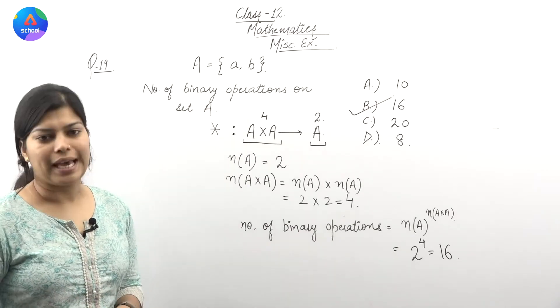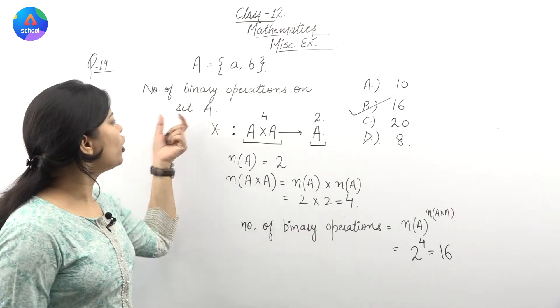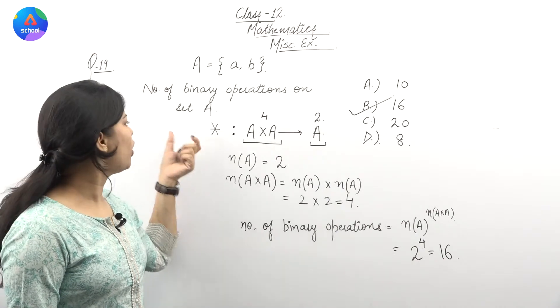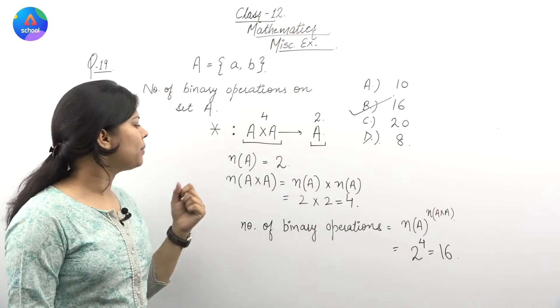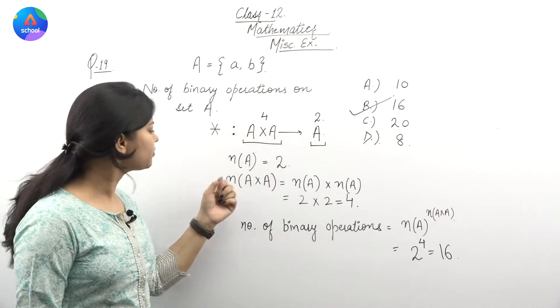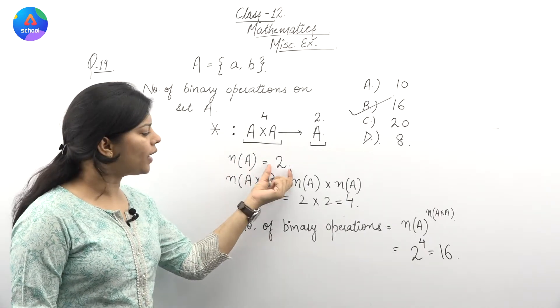Basically in this question, we had to find the number of binary operations on a set A. We saw that set A has 2 elements, so here we have 2.